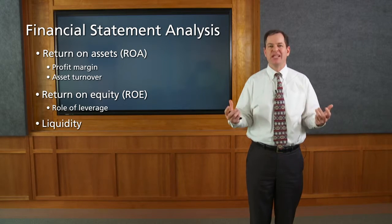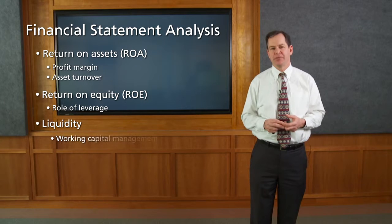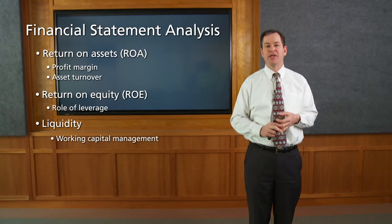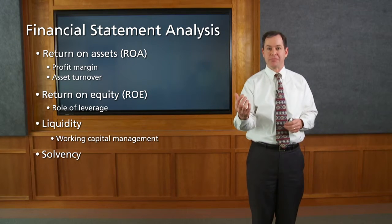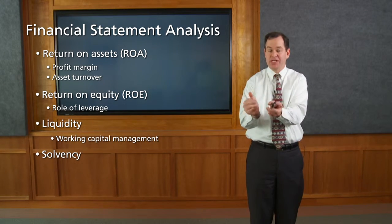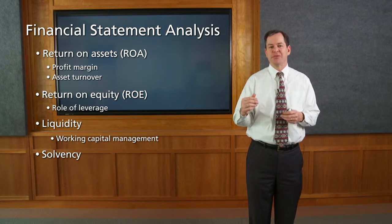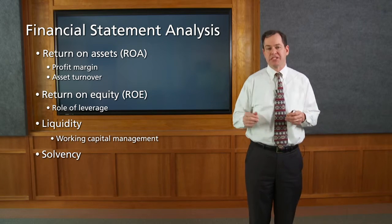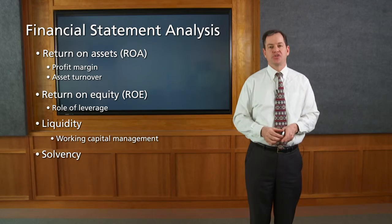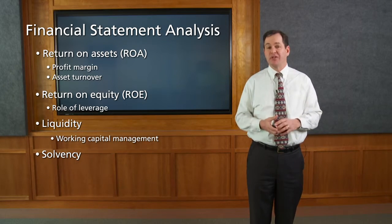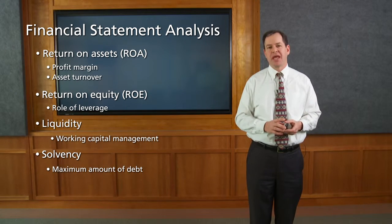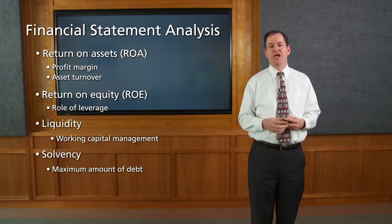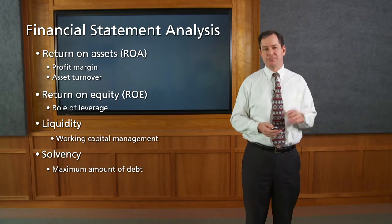The third key point is liquidity — understanding the firm's ability to meet its short-term commitments. When talking about liquidity, we'll discuss working capital management. The fourth and final key point is solvency — not only the firm's ability to meet short-term commitments, but also its long-term commitments. We'll calculate solvency ratios and discuss the maximum amounts of debt a firm can reasonably tolerate before analysts and investors get alarmed about the firm's debt burden.